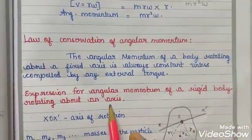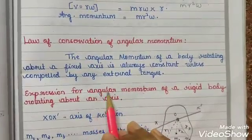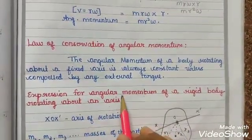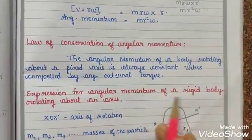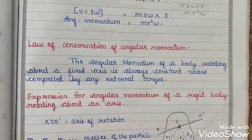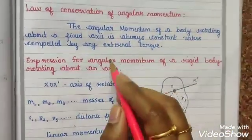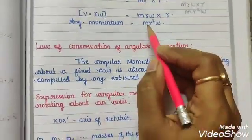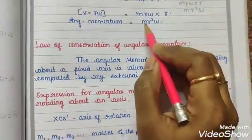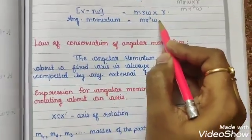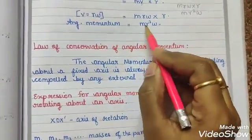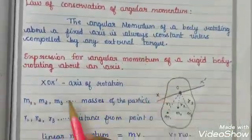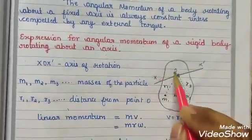We now know the expression for angular momentum of a rigid body rotating about an axis, as well as the expression for kinetic energy - both are very important 5-mark questions. For angular momentum, the formula is m·r²·omega, where m is mass, r is radius, and omega is angular velocity.